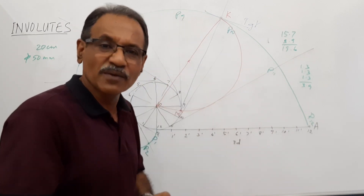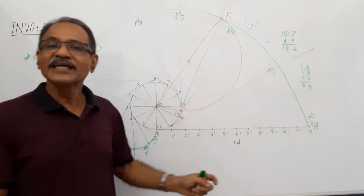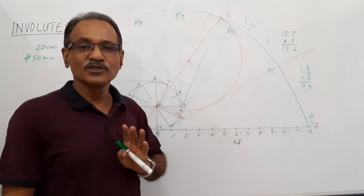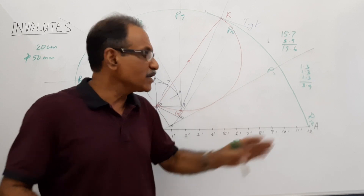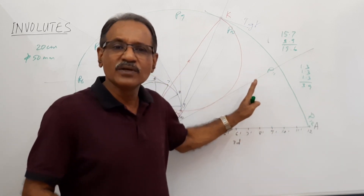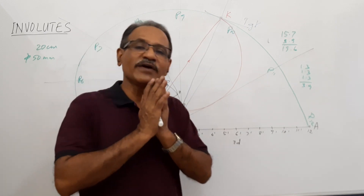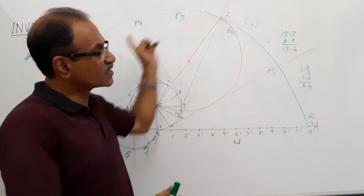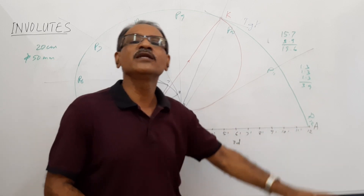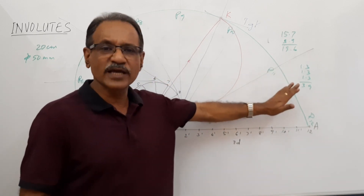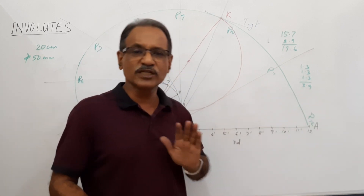Now, what is the problem? There is more length to be unwound. You have already unwound one circumference. If you unwind some more length, it will add up to this curve — that's all, this much remains the same. You have to unwind 20 cm. If you unwind one circumference, it produces this curve. Whatever additional length is unwound is to be added to this.